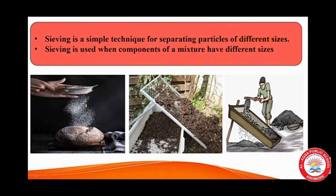Sieving allows the fine flour particles to pass through the holes of the sieve while the bigger impurities remain on the sieve. We also do sieving in the kitchen, and at construction areas — to separate pebbles and stones from sand. The fine sand particles pass through the holes of the sieve while the bigger stones remain on top.